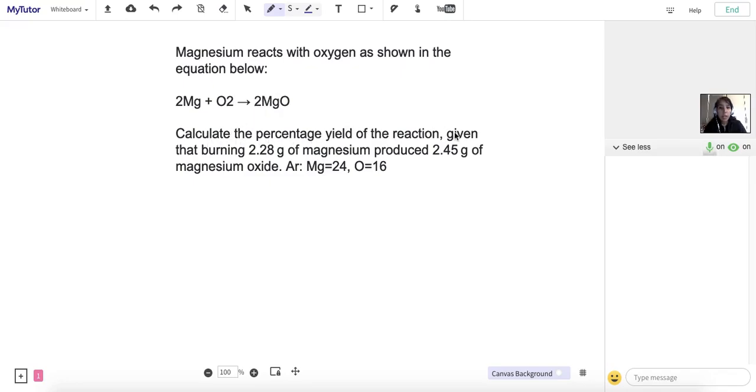Calculate the percentage yield of the reaction, given that burning 2.28 grams of magnesium produced 2.45 grams of magnesium oxide, and we've been given the relative atomic masses of both magnesium and oxygen. So before we start, we need to know what percentage yield is.